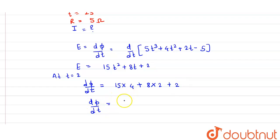So dφ/dt we have equal to 60 + 16 + 2. This is equal to 78 volts.